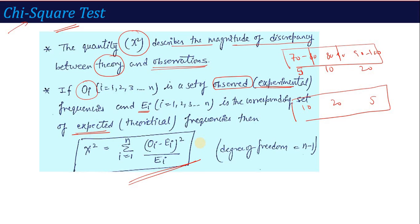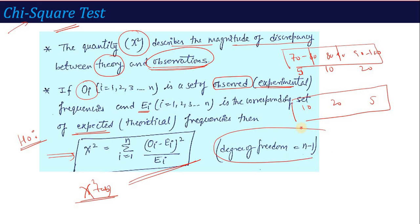The null hypothesis H0 is: there is no difference between theory and observation. We calculate Chi-Square using the formula. The tabulated value comes from the table at degree of freedom n minus 1. If Chi-Square calculated is less than Chi-Square tabulated, then H0 is accepted; otherwise H0 is rejected. What has changed in these same four steps is our Chi-Square formula and which situation we apply it to.